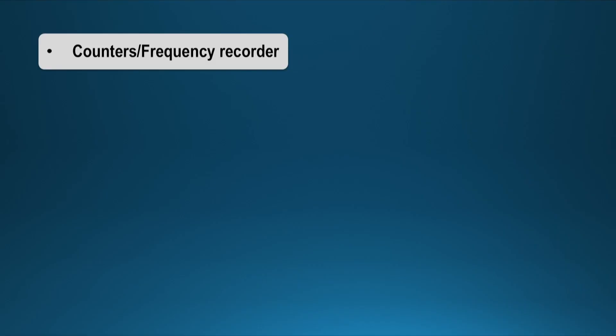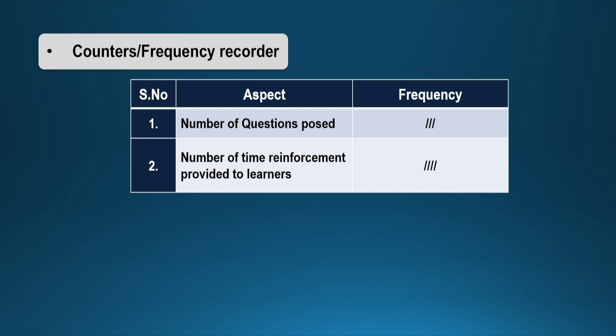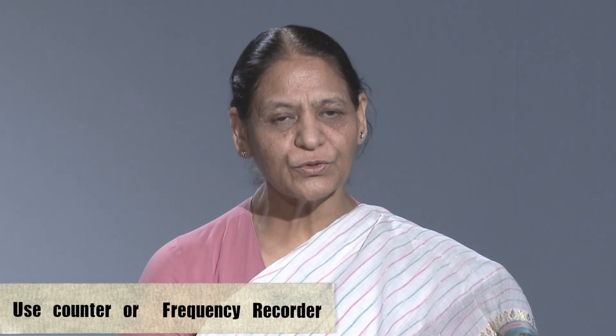The observer can use counters and frequency recorders. If you are interested in finding out how many questions are posed by the teacher in a class, you need to sit in the class and observe the teacher for 45 or 50 minutes, going on recording and putting a frequency mark as the teacher poses a question. So if you are interested in quantifying any activity undertaken by the teacher in the class, you need to record it in terms of frequency using counters or frequency recorders.